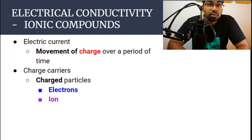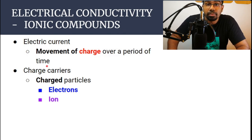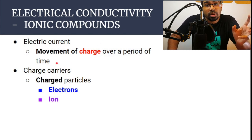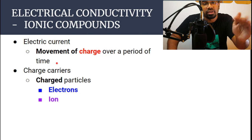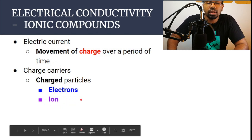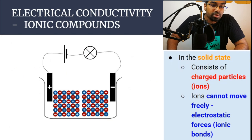Before we look at conductivity we have to understand what electrical current is. Electrical current is the movement of charge over a period of time. These charges, when we are talking about an electrical circuit, are normally the movement of electrons, but it can also be ions. Now let's take a look at ionic compounds.